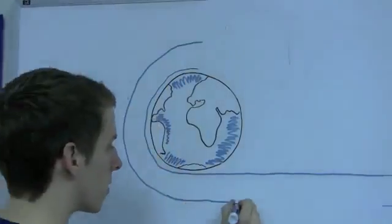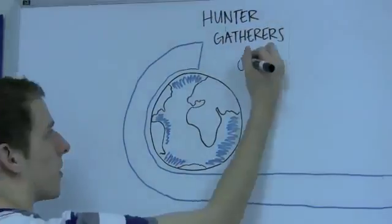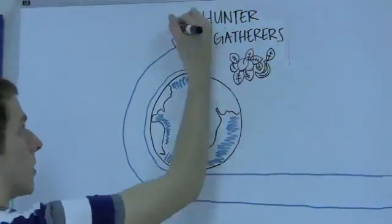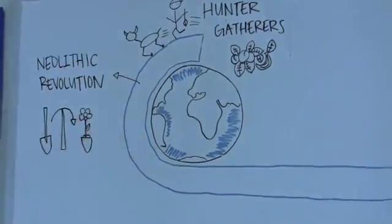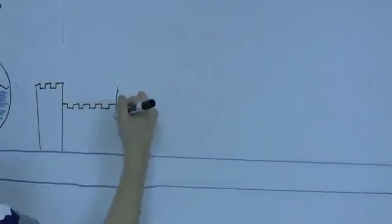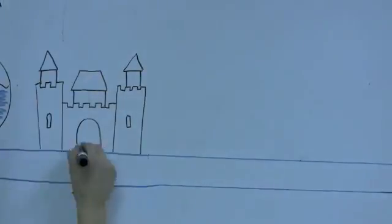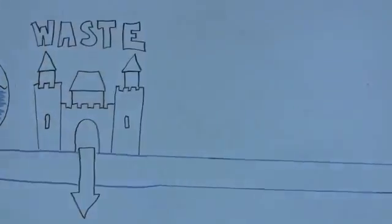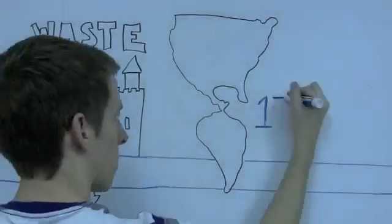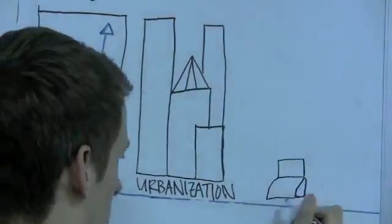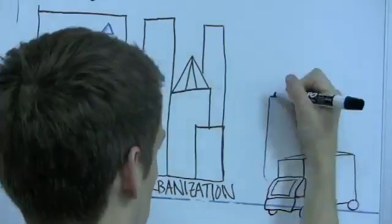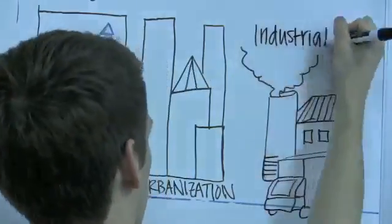How have our interactions with the environment changed over time? We began as hunter-gatherers with little impact on the environment. The Neolithic Revolution led to population expansion with an increase in waste and physical infrastructure. North America was largely undeveloped when the Pilgrims arrived in the 1700s. And finally, the Industrial Revolution led to a major increase in population, urbanization, and industrial agriculture, which continues today.